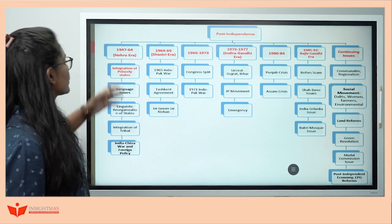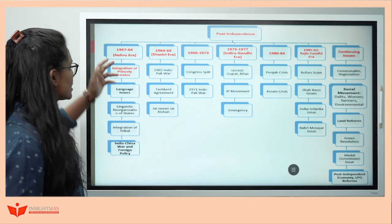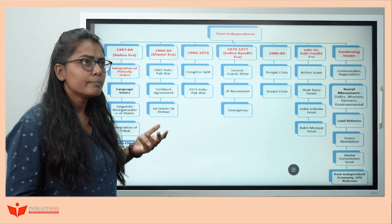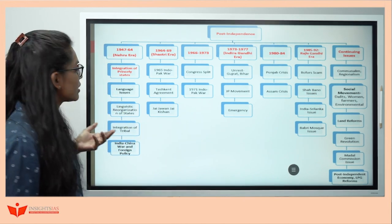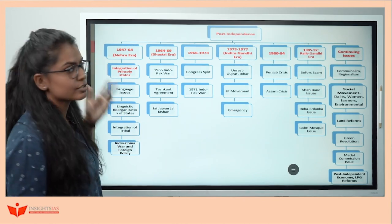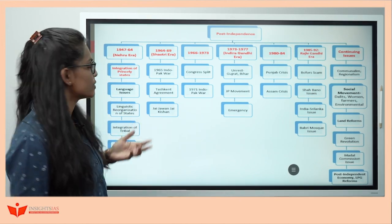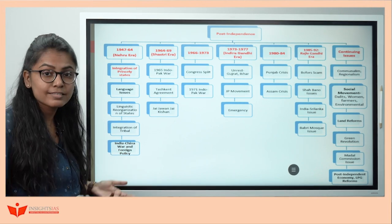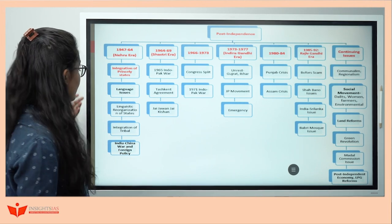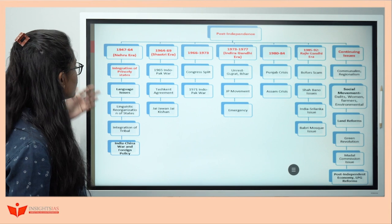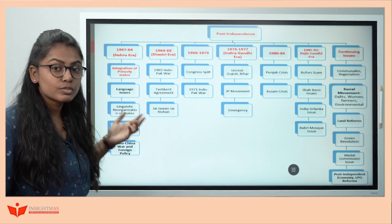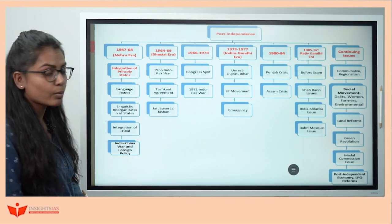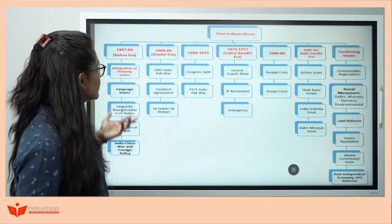From 1947 to 1964 it was the Nehru era. Recall all the major events that happened during that particular era: integration of princely states, the language issue, linguistic reorganization of states, integration of tribals — that's why Nehru came up with the tribal Panchsheel. Then the India-China war happened during the Nehru era.